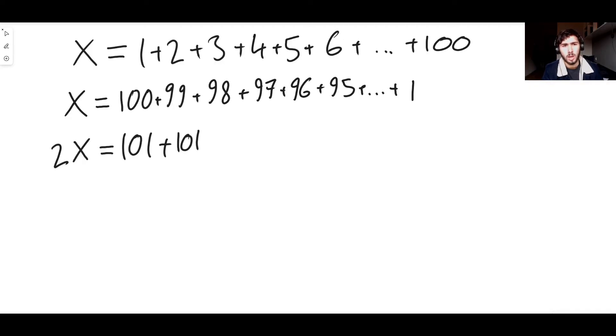The next thing we're going to do is 3 plus 98, but that's 101 as well. What's 4 plus 97? 101. What's 5 plus 96? 101. What's 6 plus 95? 101. And we do this and you get 101 for every single term.